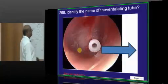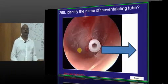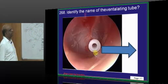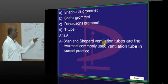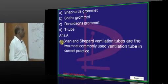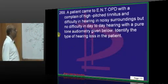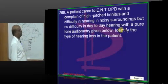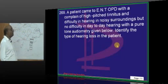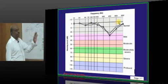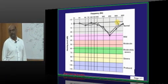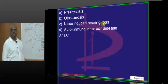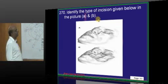Then what is this typical tube that you are using? It is called Shepherd's grommet, which is used in order to provide ventilation. Now there is high-pitched tinnitus along with hearing difficulty in noisy surroundings, and a typical appearance of the audiogram is being shown. What is this basically? It's a noise-induced hearing loss the person is having.